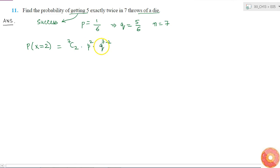The binomial distribution gives the values like this. So this is equal to 7 factorial by 2 factorial into 5 factorial into 1 by 6 square into 5 by 6 to the power of 5.